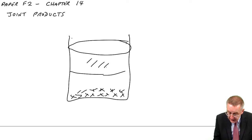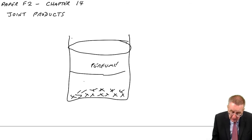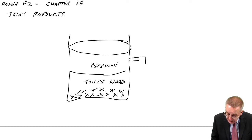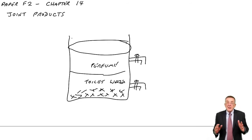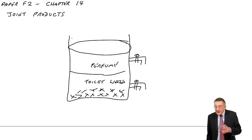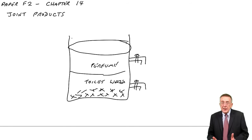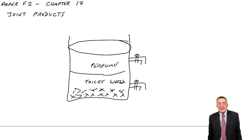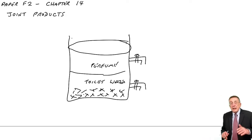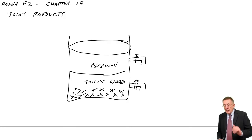So perhaps you end up with all the top bit being toilet water — eau de toilette — and on the bottom bit is the perfume. However ridiculous that may seem, the point is there's obviously lots of cost gone into that tank — the flowers, the alcohol, whatever else they put in — but out of it are coming two separate products: perfume and toilet water.